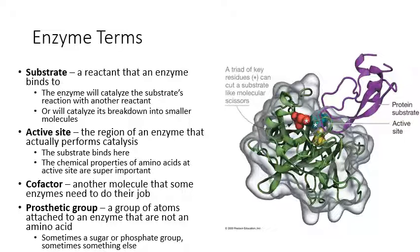Then we have prosthetic groups. A prosthetic group is an assembly of atoms that is covalently bonded to the enzyme but is not part of an amino acid. It's another molecule actually covalently bonded to the enzyme. Enzymes are made out of amino acids — an amino acid chain that folds up into a particular shape. If you attach anything to that using covalent bonds and it's not an amino acid, that's a prosthetic group. For example, some enzymes will have a sugar attached that counts as a prosthetic group.